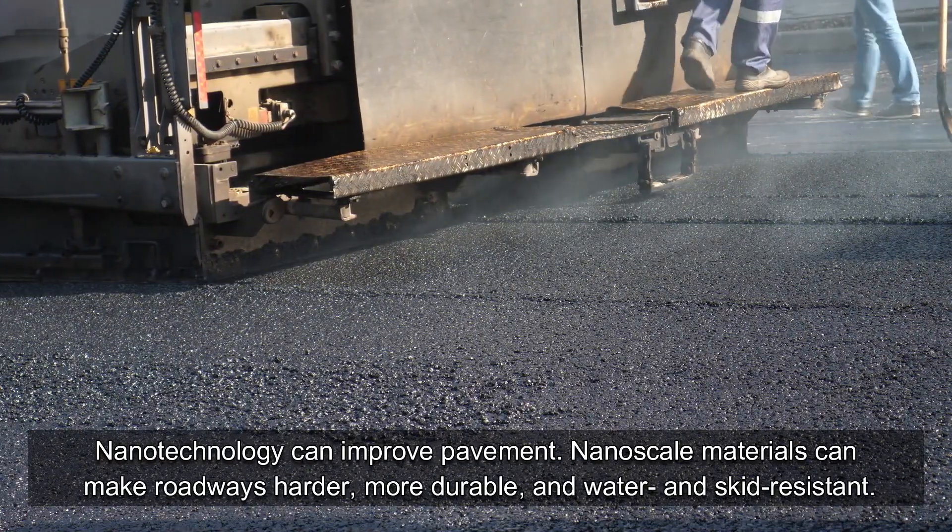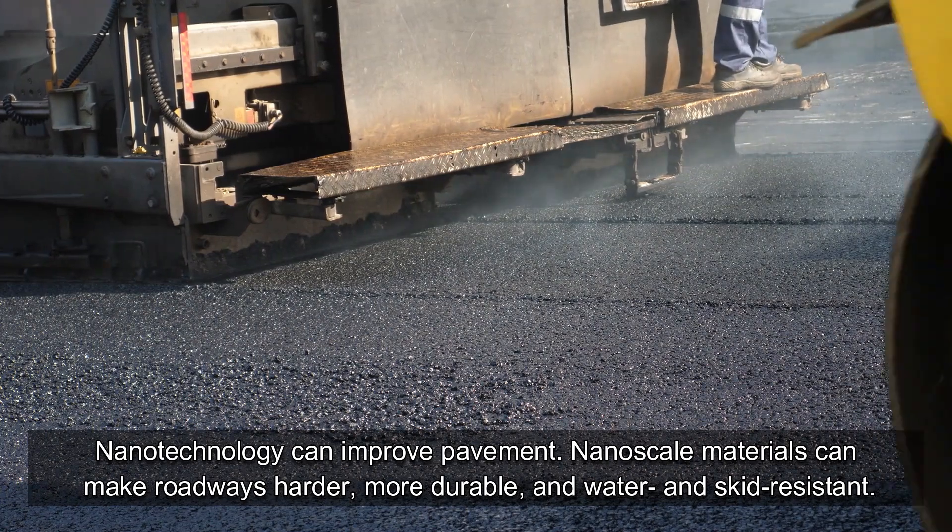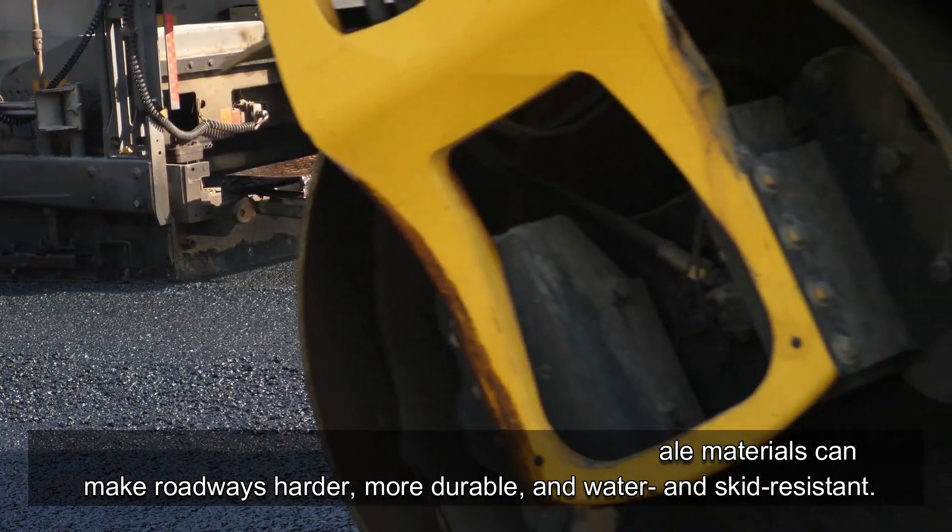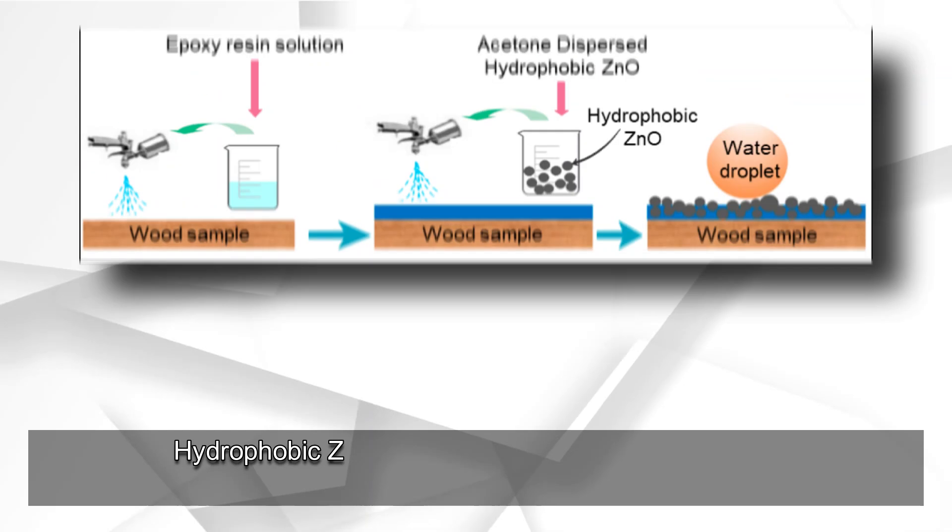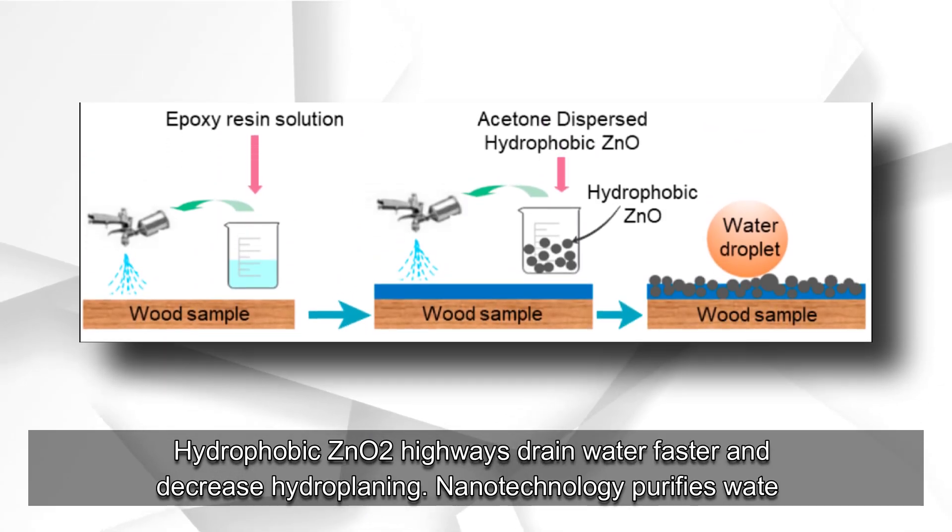Nanotechnology can improve pavement. Nanoscale materials can make roadways harder, more durable, and water and skid-resistant. Hydrophobic nano-highways drain water faster and decrease hydroplaning.